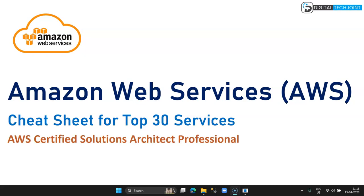Hi guys, welcome to Digital Tech. In this video we are going to go through the top 30 services of AWS for the Amazon AWS Certified Solution Architect Professional. AWS Amazon Web Service has around 200 plus services available. Getting started initially seems like a daunting task, with so much content and so many articles and videos, one gets confused and does not know how to go about it.